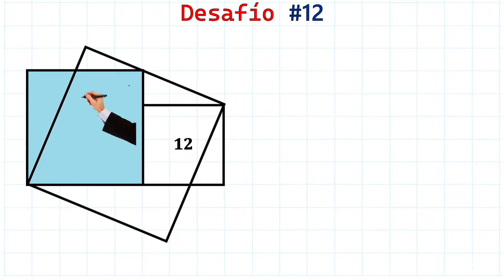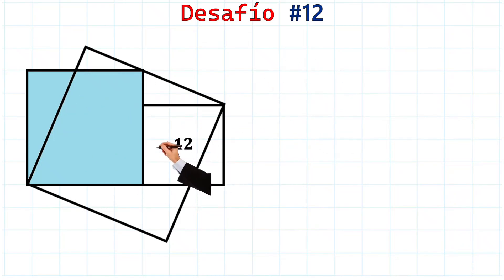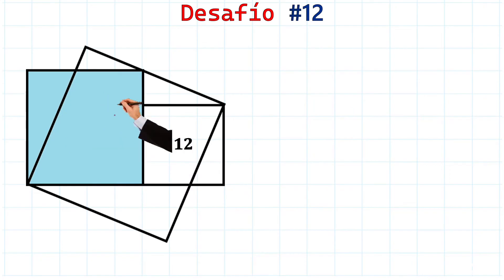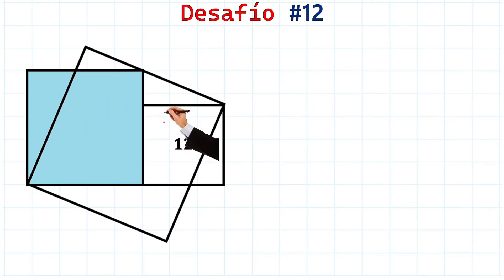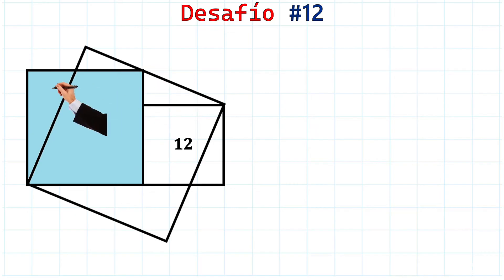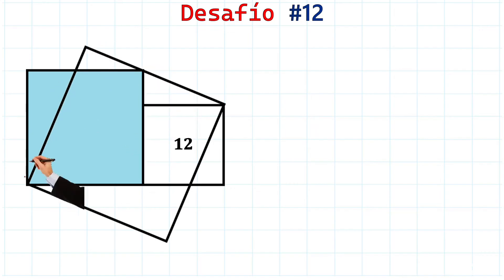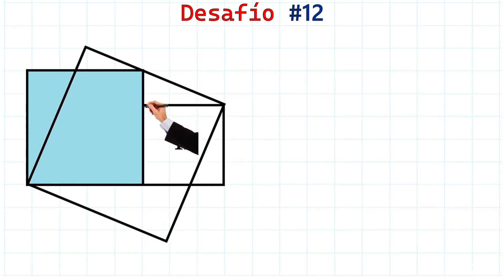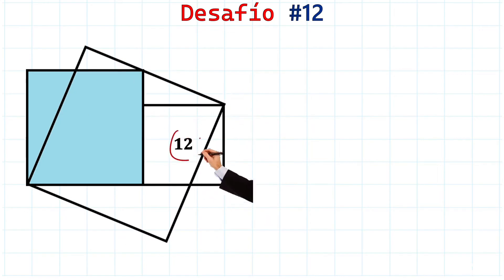Ladies and gentlemen, look at this beautiful and interesting exercise we have here. We need to find the shaded area in the figure. Let's do it. Notice we have three squares here: the square whose area we want to find, this large square that's rotated, and this square over here with an area of 2.